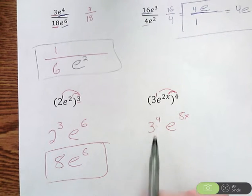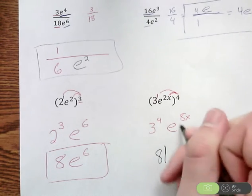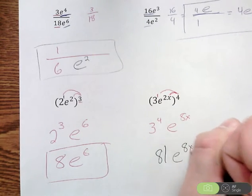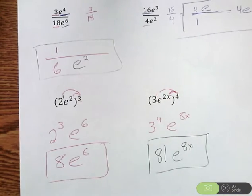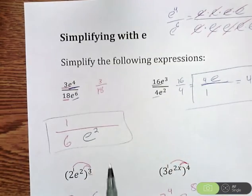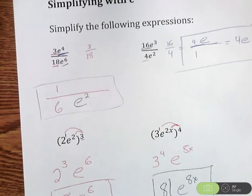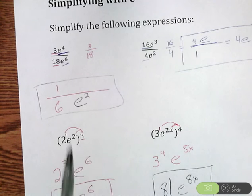You can clean this up a little bit more. We could figure out 3 to the fourth power. You could either do that in your head or with a calculator. 3 to the fourth power is 81. And e to the 8x, we're going to leave alone. So that would be our answer. And that is simplifying expressions with e. Notice how nothing really changes whenever we're simplifying exponents earlier, except the only difference now is instead of x, y, or z, we're dealing with e.